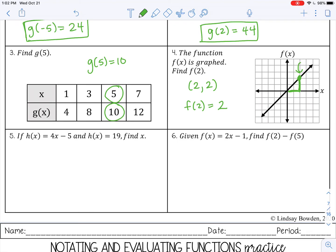Number 5. If h of x equals 4x minus 5, and h of x equals 19, find x. So this one is a little bit different.